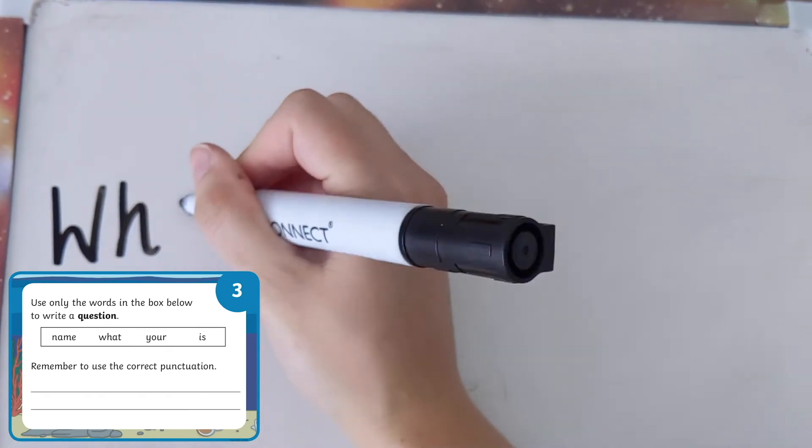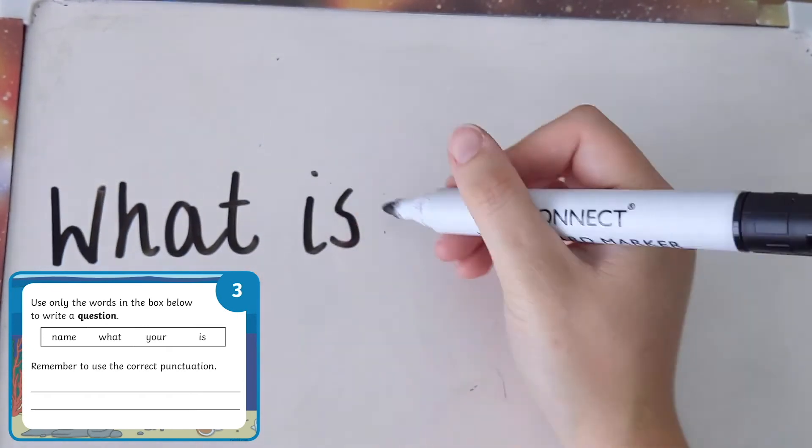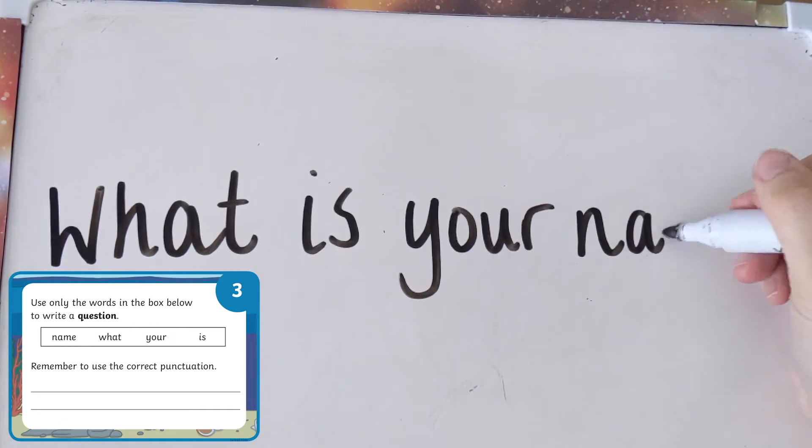A question sentence must end with a question mark and will often start with one of the question words, such as what, who, when, where, why or how.